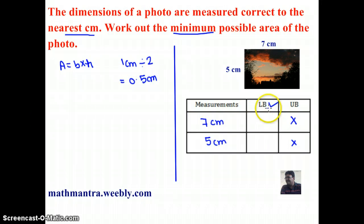Now to get the lower bound I need to subtract 0.5 centimeters from the dimension. So 7 minus 0.5 is 6.5 centimeters, and 5 minus 0.5 is 4.5 centimeters.